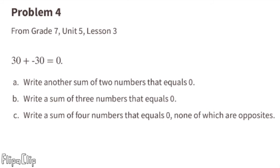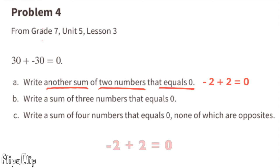Problem number 4 from 7th grade Unit 5 Lesson 3. We're told 30 plus negative 30 equals 0. Part A: write another sum of two numbers that equals 0. For example, negative 2 plus 2 equals 0.